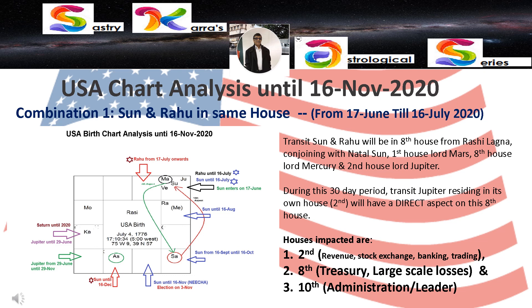Transit Rahu is already residing in Gemini — the 8th house from Rashi Lagna and 5th house from Chandra Lagna — creating all the mess that is supposed to happen. For a country, the 5th house deals with sports and entertainment. The sports industry has lost millions of dollars; no movies are being released from Hollywood and no movie shootings are happening. The 8th house deals with treasury and large-scale losses, clearly visible due to the sports, entertainment, and coronavirus impact.